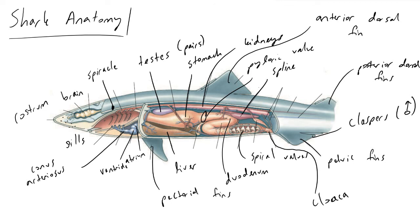The last thing to note is the lateral line throughout the shark. The lateral line is a bunch of mechanoreceptors that function to interpret vibrations, water waves, and currents in the surrounding water. This allows sharks to detect very minute differences in their nearby environment, which makes them excellent predators. That's going to wrap things up — thanks for watching, and let me know if you have any questions.